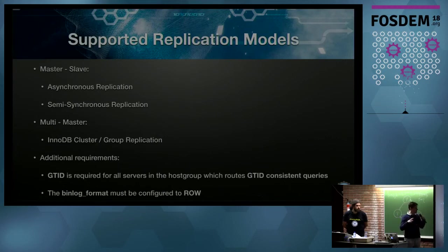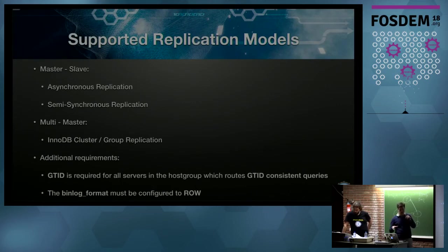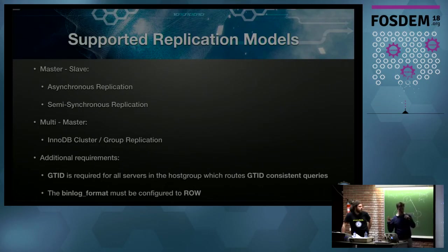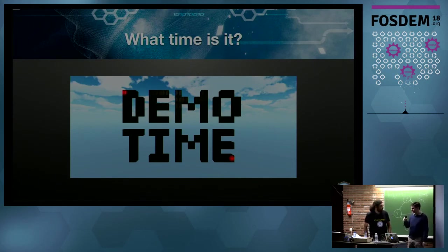To sum up, let's look at what is supported for GTID consistent reads in ProxySQL. With basic master-slave replication, both asynchronous and semi-synchronous replication are supported. For multi-master setups, InnoDB cluster and group replication are also supported. A quick note on requirements: GTID is required for all servers in the host group, MySQL 5.7 is required so we can have that information returned in the OK packet, and the binlog format must be configured to row. Now it's time for Rene to do a live demo.